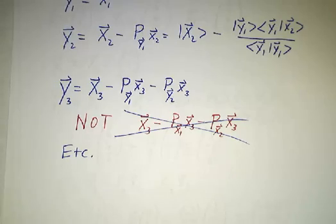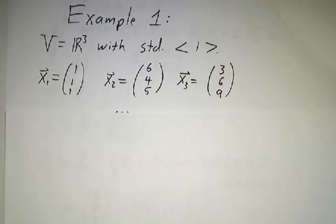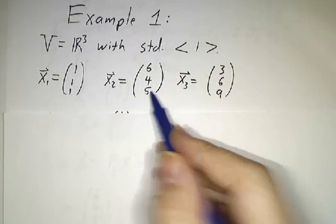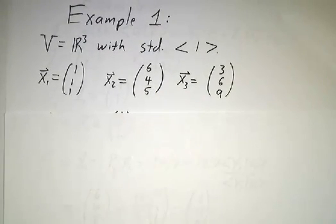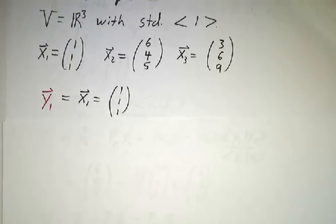So let's work a couple of examples. The first example is in R3 with a standard inner product. And somebody gives us a basis: (1, 1, 1), (6, 4, 5), and (3, 6, 9). And we have to convert that first into an orthogonal basis and then into an orthonormal basis. So y1 is just going to be x1. That's (1, 1, 1).